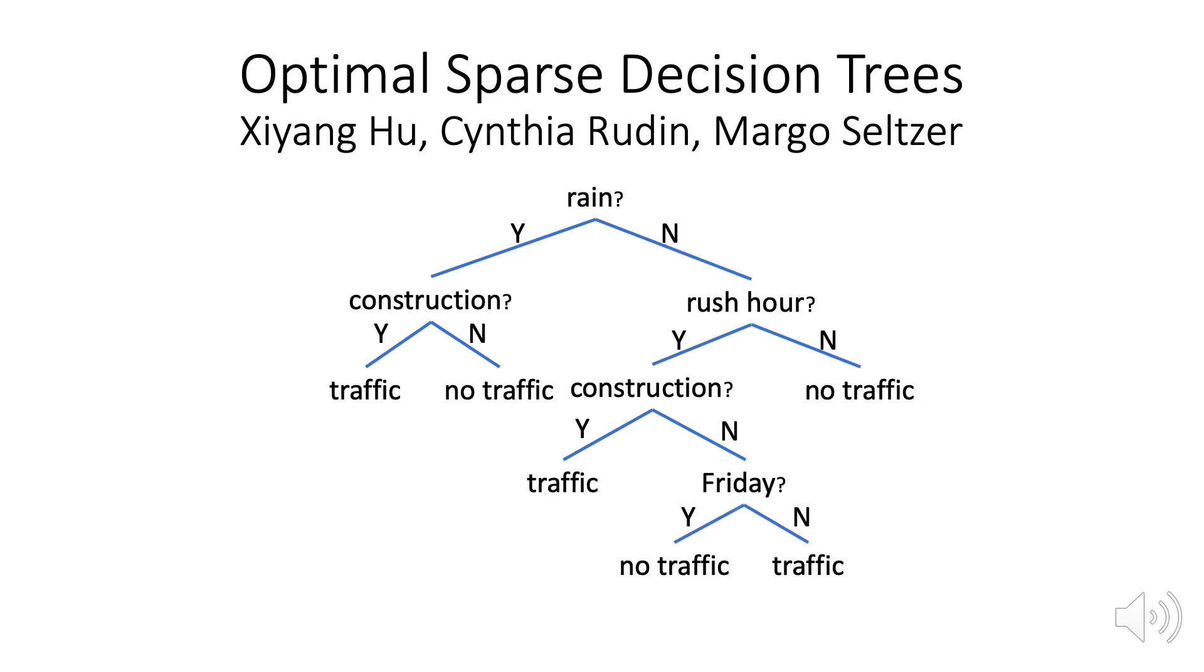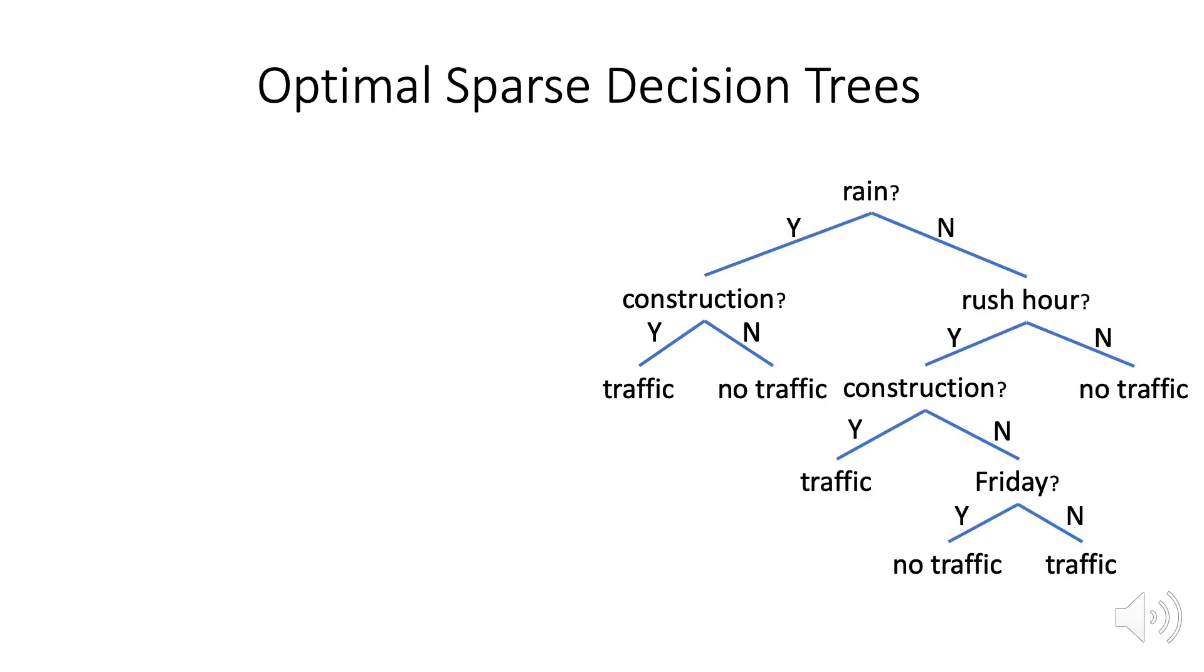The problem is that if a greedy algorithm chooses the wrong split at the top of the tree, there's no way to undo it. So these greedy algorithms produce suboptimal trees.